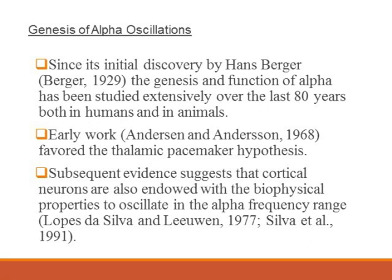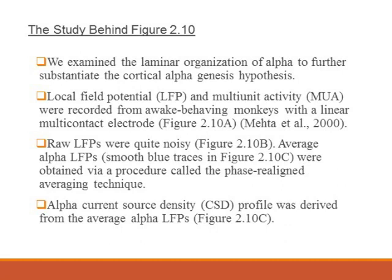Subsequent evidence, on the other hand, appears to suggest that cortical neurons could also oscillate in the alpha frequency range. We examined the laminar organization of alpha to further substantiate the cortical alpha genesis hypothesis.